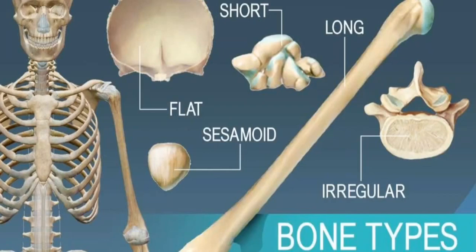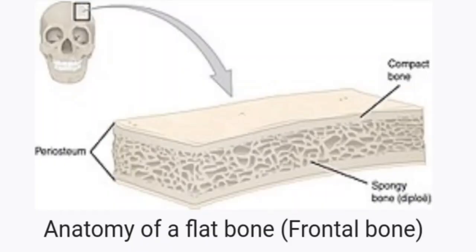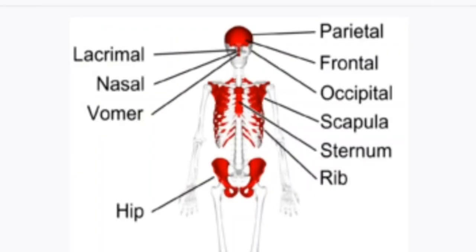Flat bones protect internal organs. The flat bones in the skull include: occipital, parietal, frontal, nasal, lacrimal, and vomer. Flat bones protect the brain, heart, and pelvic organs. Flat bones can provide protection like a shield, and they also provide large areas of attachment for muscles.